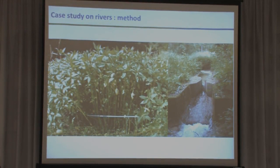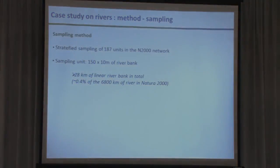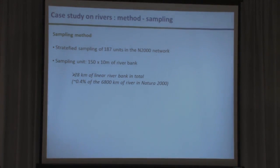I'm going to split the presentation into three habitat types. I'll go into more detail along the rivers because it's the most refined study, then present the main results for the other two habitat types. We performed a stratified sampling along the rivers and visited 187 units within the Natura 2000 network. A sampling unit was a part of riverbank of 150 meters by 10 meters.